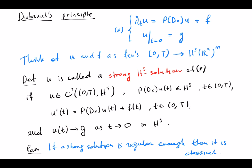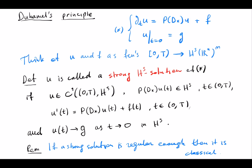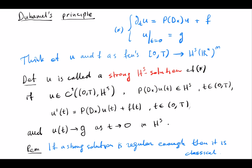Since u(t) is a whole function in space, the left-hand side time derivative can be interpreted as a time derivative taken in the space H^s. The right-hand side differential operator becomes an operator acting in H^s. A strong H^s solution of our initial value problem is a function in C^1, and we also want the differential operator applied to the solution at any given time to be in H^s.